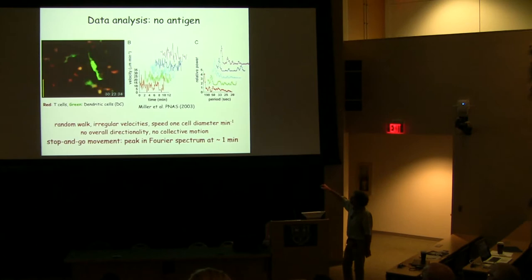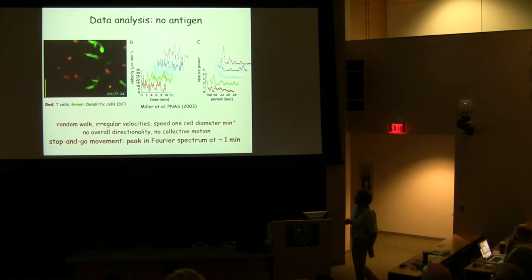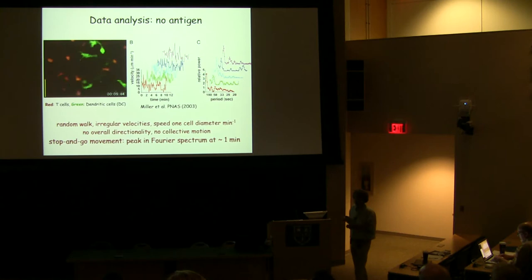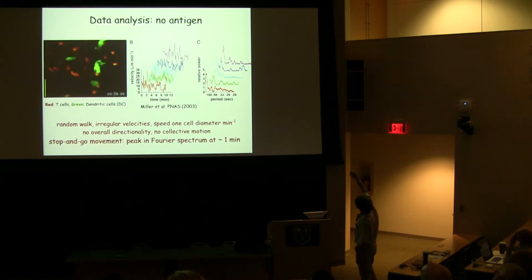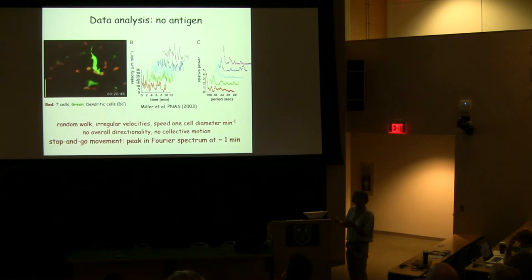Here on the left you see a movie from the Mark Miller lab from the early times. It's a normal lymph node with no antigen present — in red you see T cells, in green you see dendritic cells. This is the random movement of T cells in a normal lymph node. Their results showed velocity profiles that are very irregular: T cells are sometimes going at high speed, then they seem to stop, then they're going at high speed again. They did a Fourier analysis showing that at short timescales, at a period of about a minute, the Fourier spectrum peaks. They argued, inspired by bacterial movement, that T cells do a stop-and-go behavior — they walk for a while, stop, change direction, and walk again, very much like bacterial tumbling.